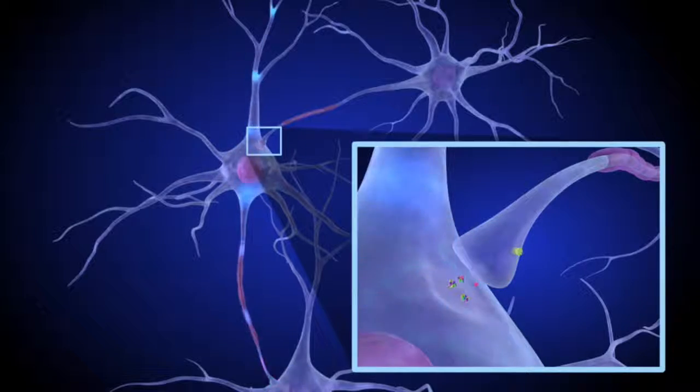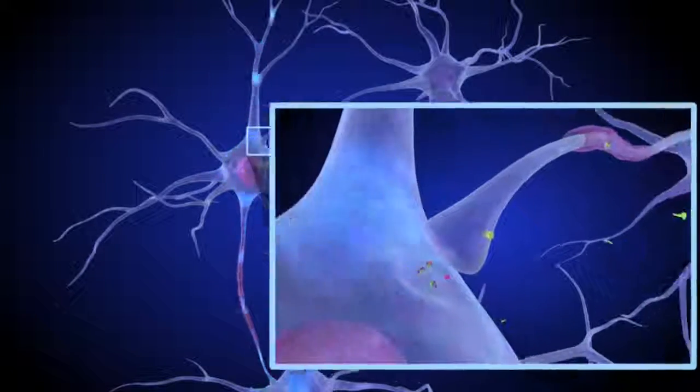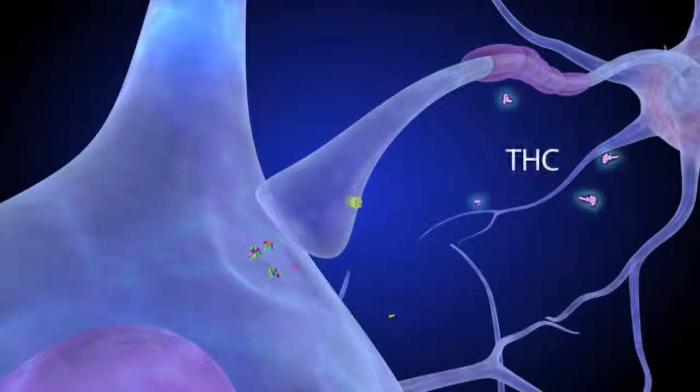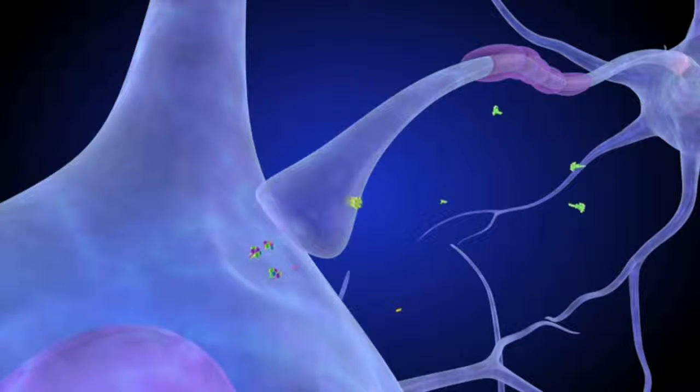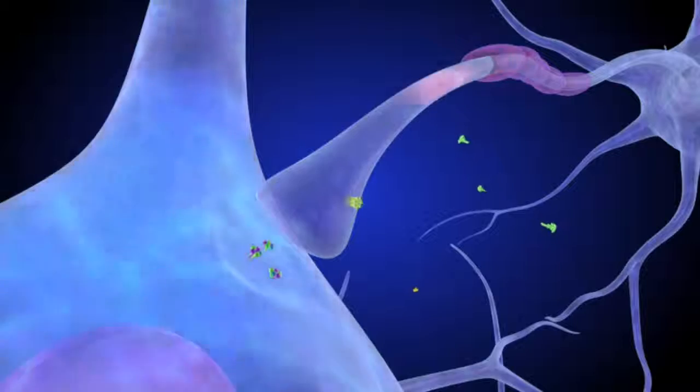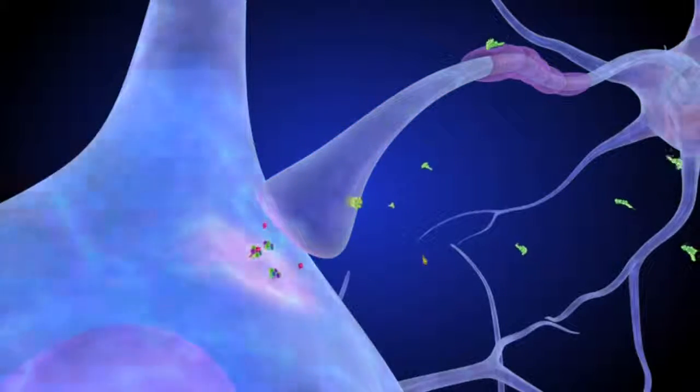When someone smokes marijuana, THC molecules quickly reach the brain. There, THC competes with the brain's endocannabinoids to bind with cannabinoid receptors on neurons that regulate dopamine activity.